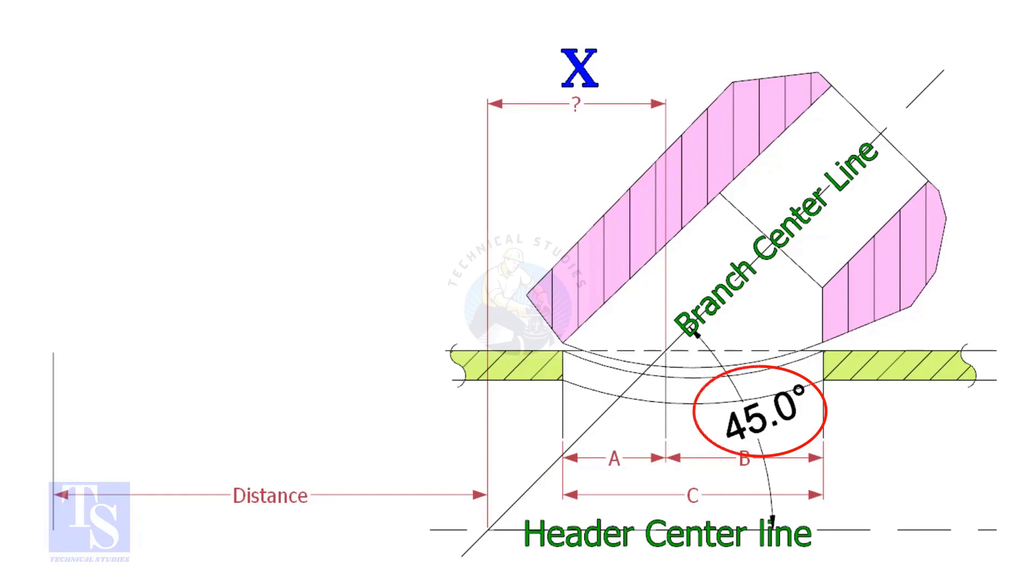If the including angle is 45 degree, the value of x will be always half OD of the header. Suppose the OD of the header is 400 millimeters, then the value of x will be 200 millimeters.